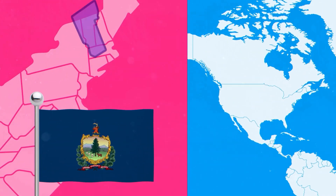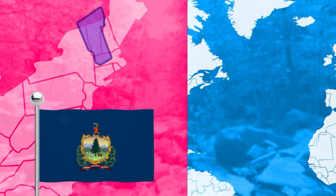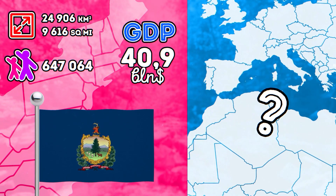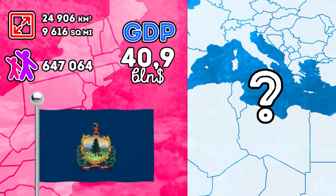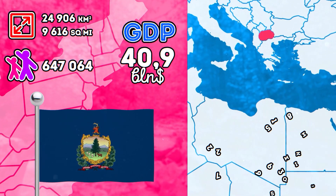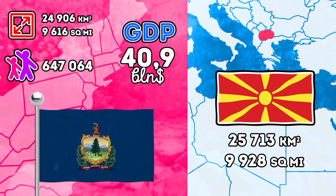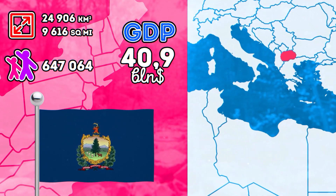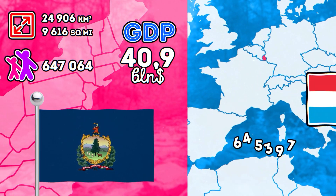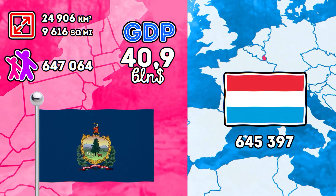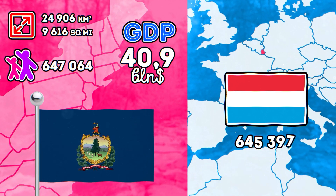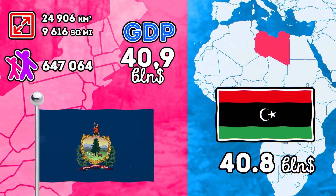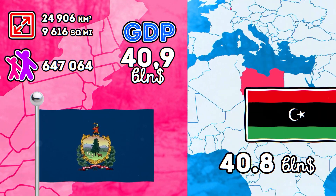Let's move on to Vermont, the state with the lowest GDP of any state. In area, Vermont is comparable to North Macedonia. In population, it's comparable to Luxembourg. And in nominal GDP, to Libya and Latvia.